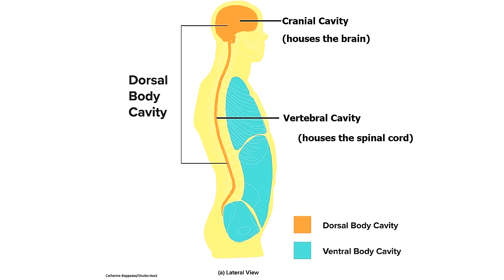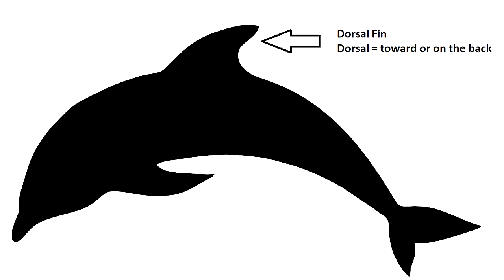The dorsal body cavity is located toward the back of the body and it houses our central nervous system. Remember that the dorsal fin is on the dolphin's back, and that'll help you remember that the dorsal cavity is the one toward the back.